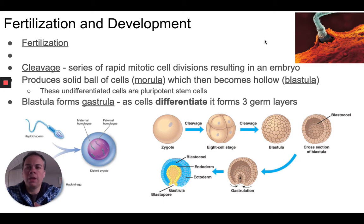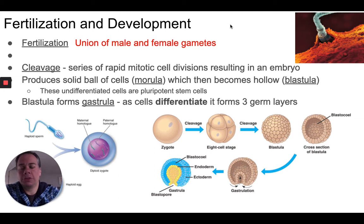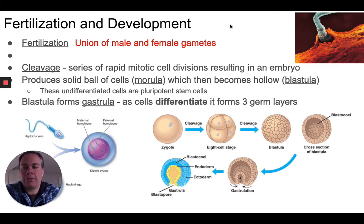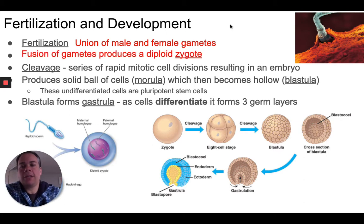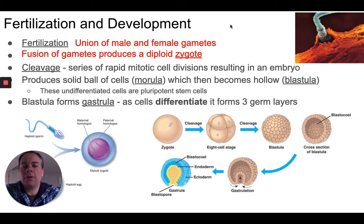We're talking about organisms that reproduce sexually. In order for sexual reproduction to take place in various organisms, fertilization is necessary. Fertilization refers to the combination of the male and female gametes. That process produces a cell. We know that these gametes have half the number of chromosomes as normal body cells — they're haploid cells. A male reproductive cell contains half the chromosomes, and the female reproductive cell contains half the chromosomes.